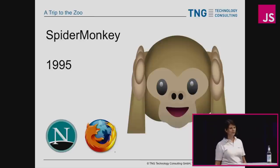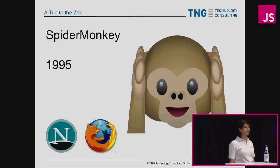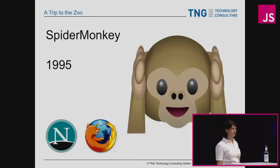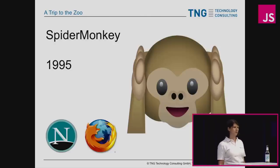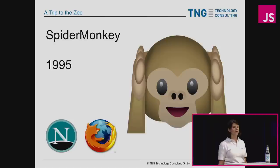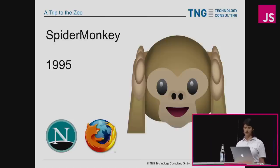A little bit of history. SpiderMonkey is the very first JavaScript engine. It was written in 1995 and back then it was used in Netscape Communicator. After several rewrites, that's the engine we have in Firefox today.